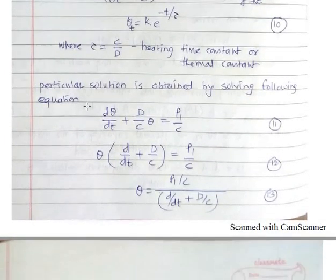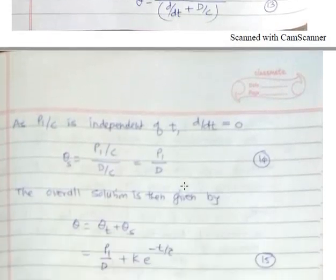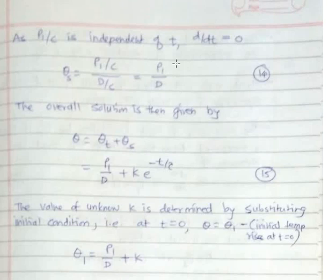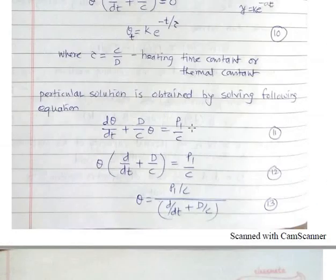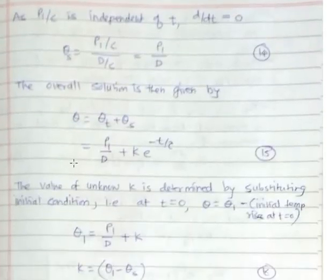The particular solution is obtained by solving the full equation. Since P1 upon C is a constant term independent of time, D by DT can be taken as zero. Therefore theta S, where S stands for steady state, is given by theta S equals P1 upon D. The overall solution to equation number 8 is theta equals theta T plus theta S, that is P1 upon D plus K·e raised to minus T upon tau.